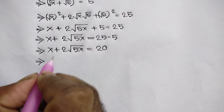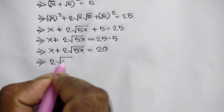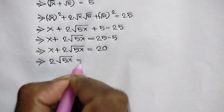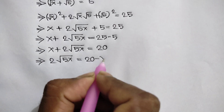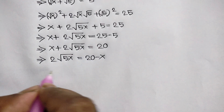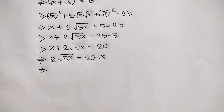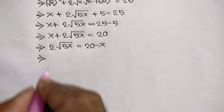So x plus 2 square root of 5x is equal to 25 minus 5, which is 20. Now taking this x to the right side, we will get 2 square root of 5x is equal to 20 minus x. Again, squaring both sides, we can write here: